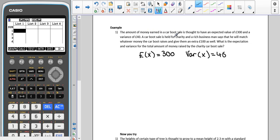So then we have a car boot sale held for charity, and a rich businessman says that he will match whatever money the car boot raises and give an extra 100 pounds as well. So whatever X is, this person is going to double it, so we would then have 2X. But they also say that they will give an extra 100 pounds as well, so we're also going to be adding on 100 pounds. We're then asked what is the expectation and variance for the total amount of money raised by the charity car boot sale.